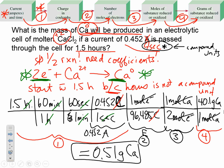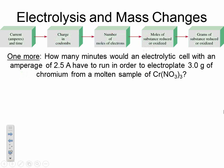Sample problem 2: How many minutes would an electrolytic cell with 2.5 amps have to run to electroplate 3.0 grams of chromium from molten Cr(NO₃)₃? This problem asks for time and gives us grams — so we go in the opposite direction on our diagram. Cross off the A and write 2.5 coulombs per second.